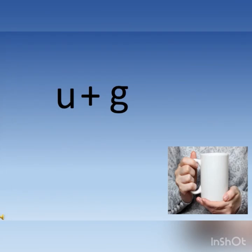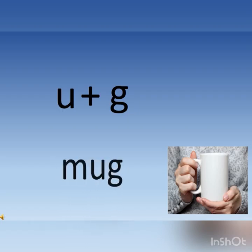Now let's read a few words that have ag in them. U plus G says ag. And the word is m, ag, mug. Children, you are going to read it as m, ag, mug.